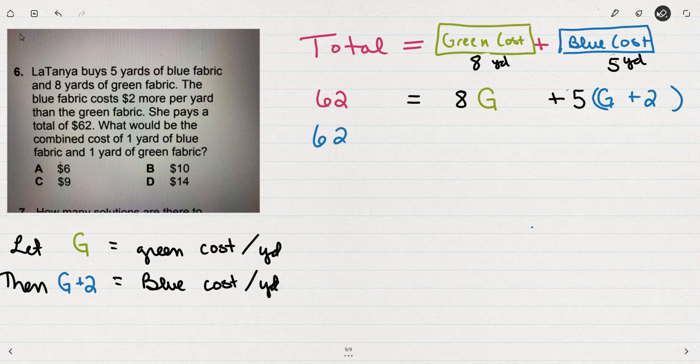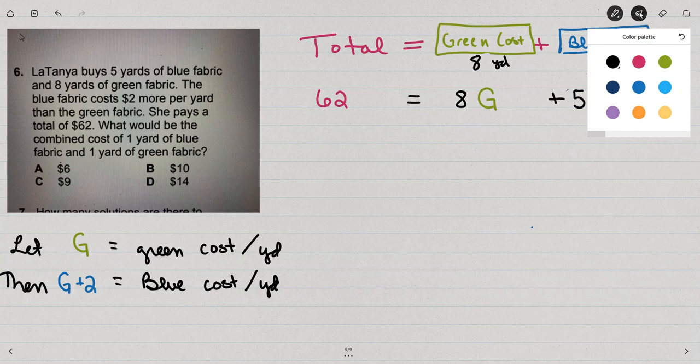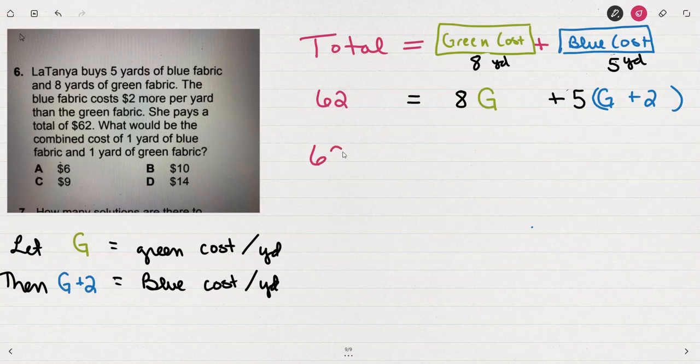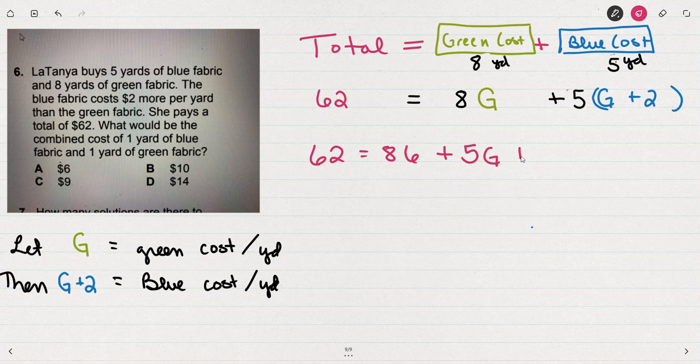When I solve this equation, I've got to multiply the five yards times the cost, so I've got to distribute this five. So 5G plus 5 times 2 is 10. Let me make that more clear that that's a G and not a six.